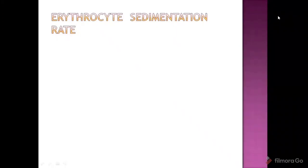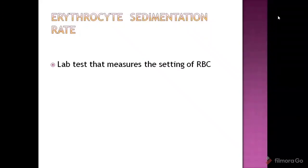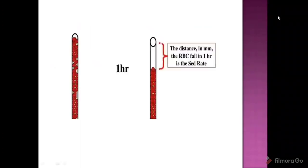First one: erythrocyte sedimentation rate. This is a lab test — it is the settling of the RBC. This is the diagrammatic presentation. You see, this is a blood-filled tube. After one hour, the RBC settles down as sediment. This is the distance measured in millimetres — that is the sedimentation rate.